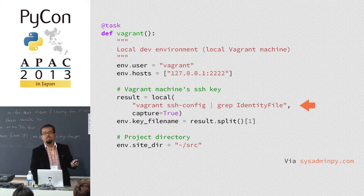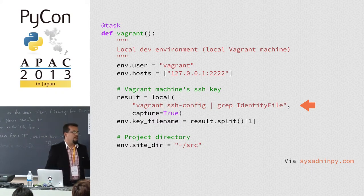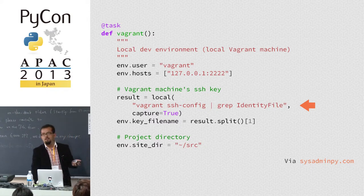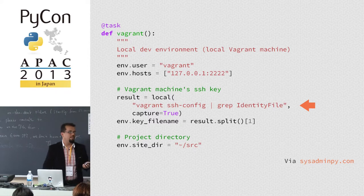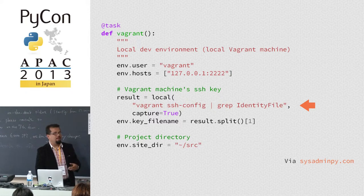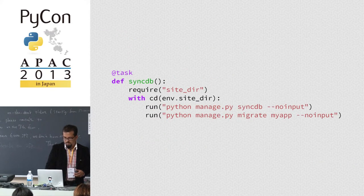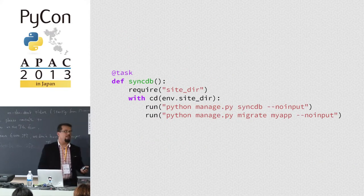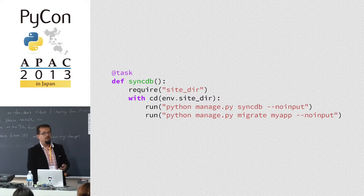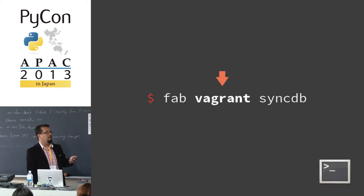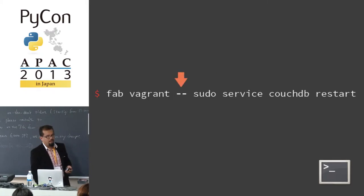For example, a common task when developing Django is to sync the DB and then run South migrations. You can run them in just one step inside the Vagrant environment with a simple command, making the interaction much more seamless.